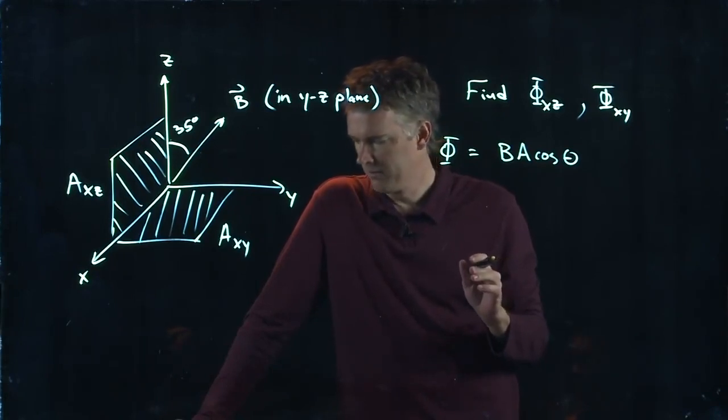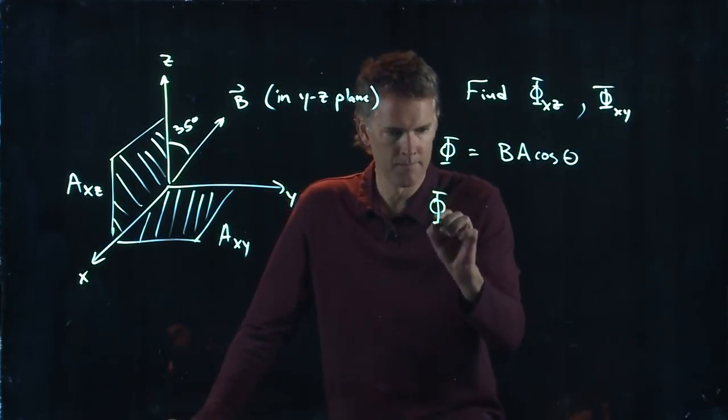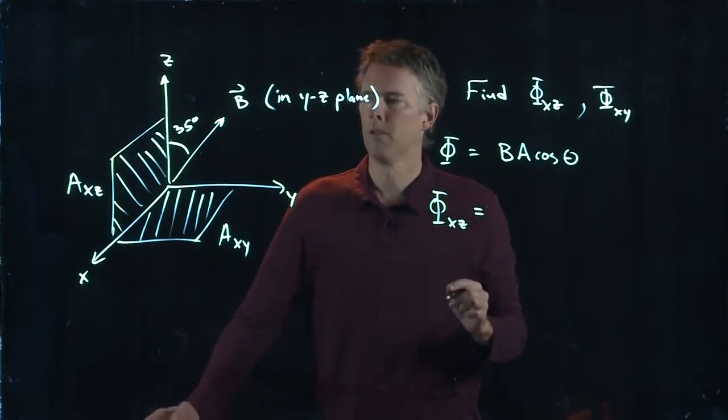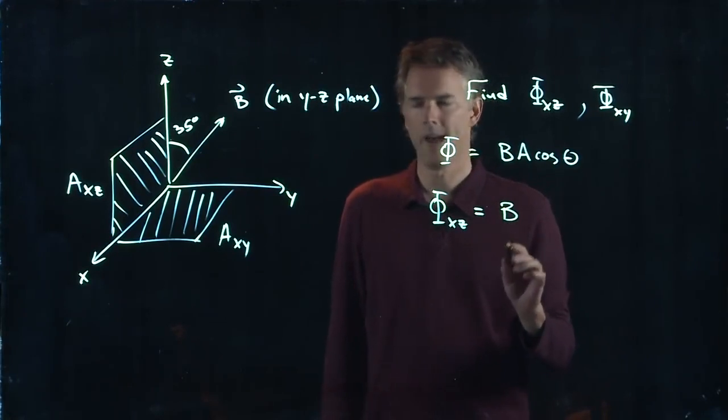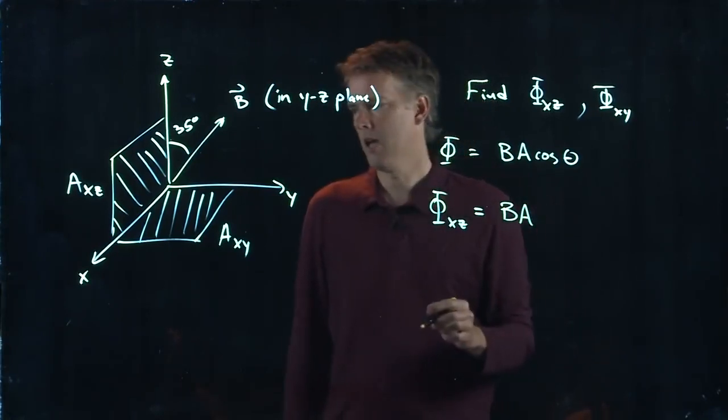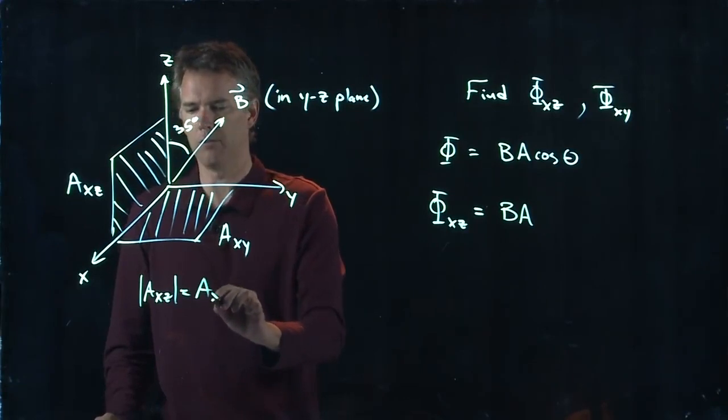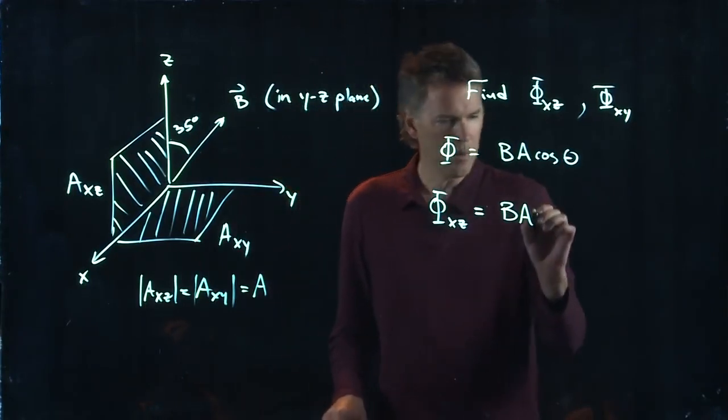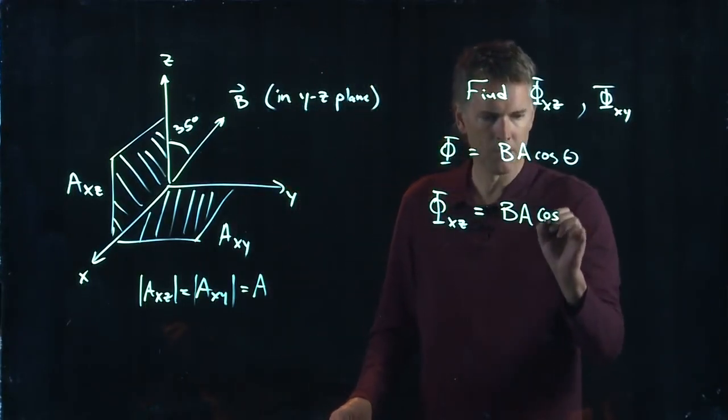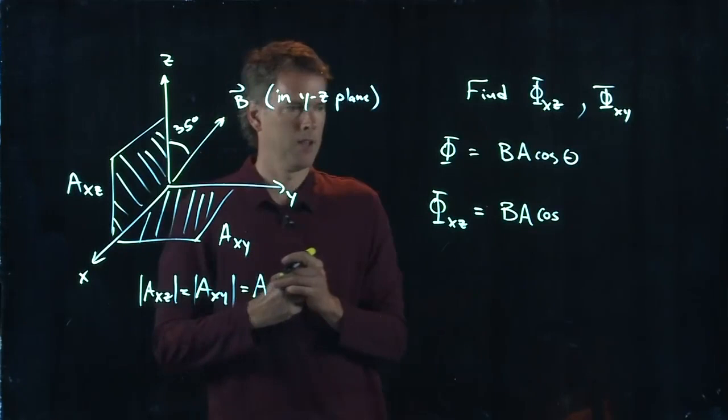Flux is going to be B times A times the cosine of the angle between the two. So for phi_XZ, what do we have? Well, we've got B. We have some area A. And we're going to say that both these areas are equal. So A_XZ is equal to A_XY. And we're just going to call that capital A. And now we have the angle between this area and this B field.